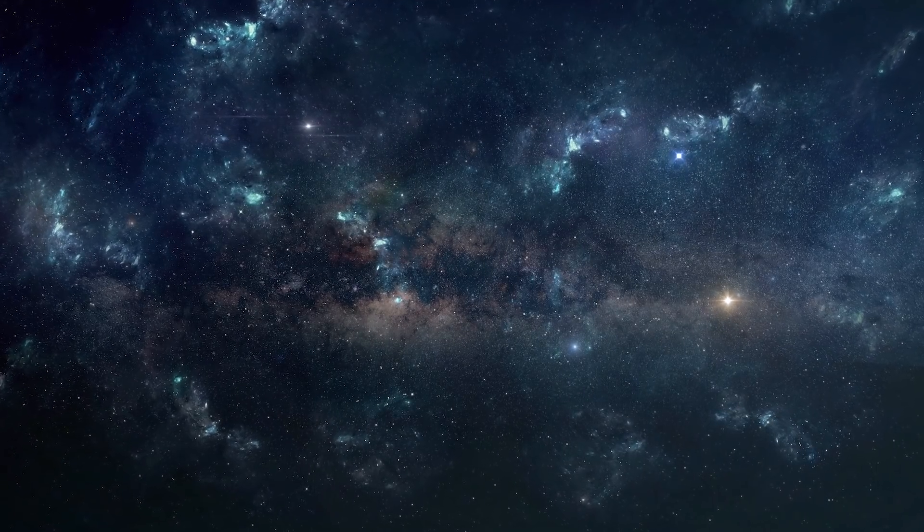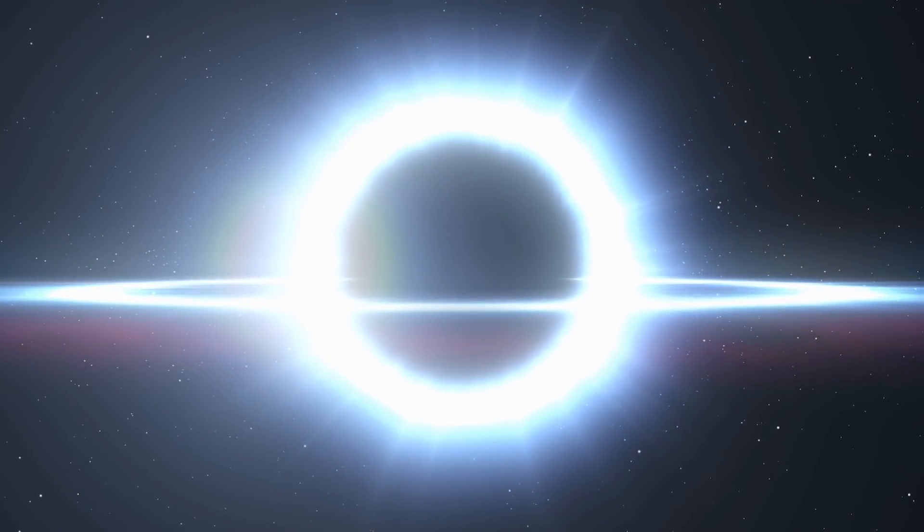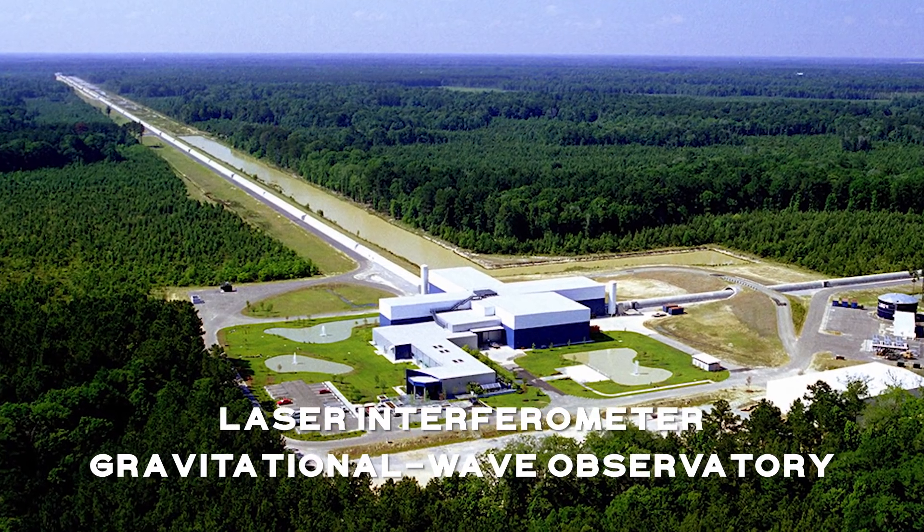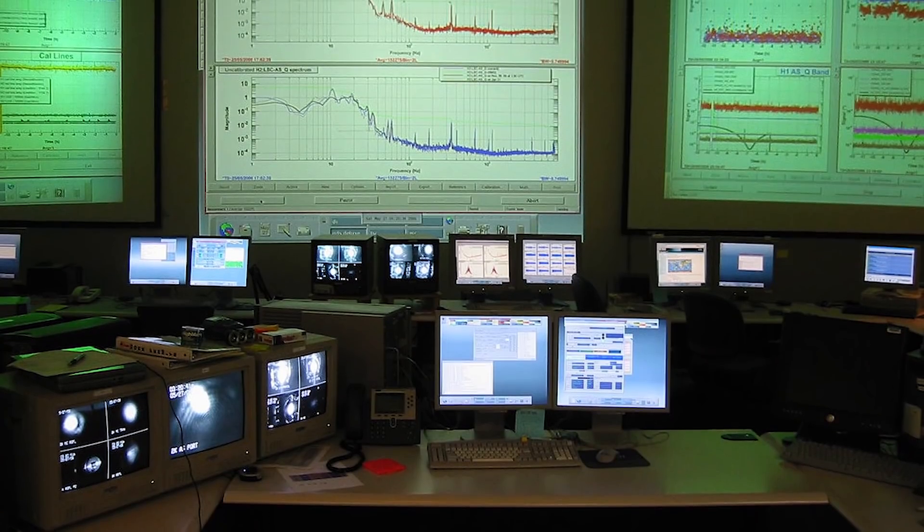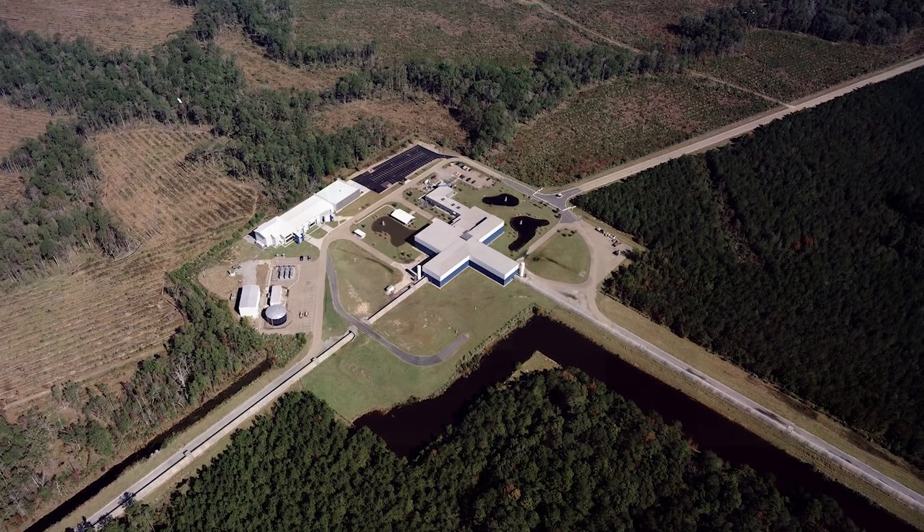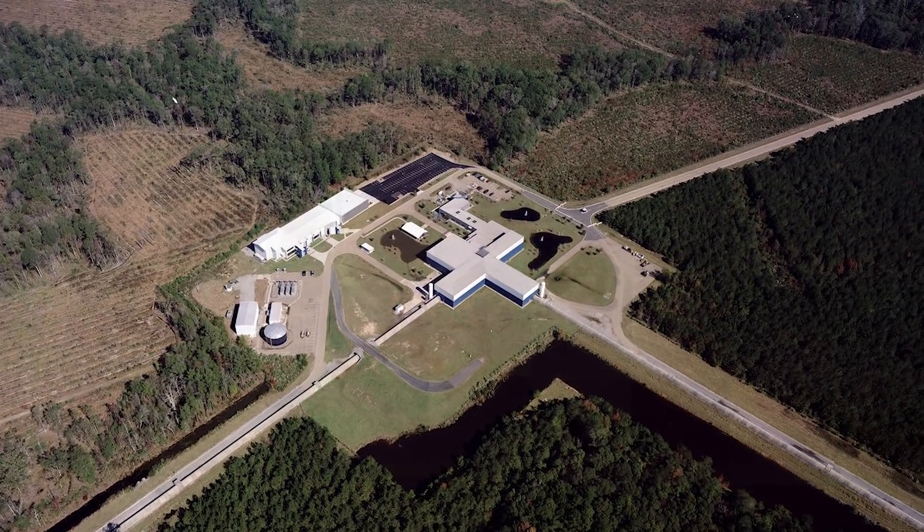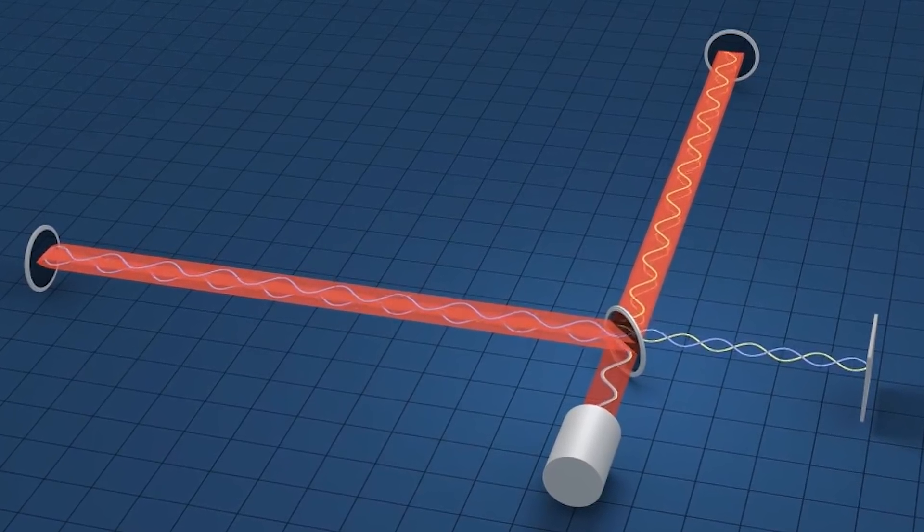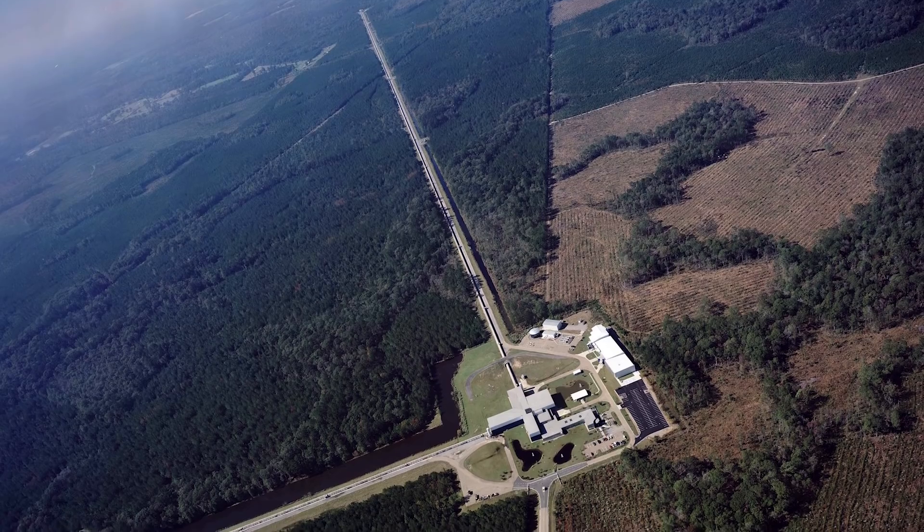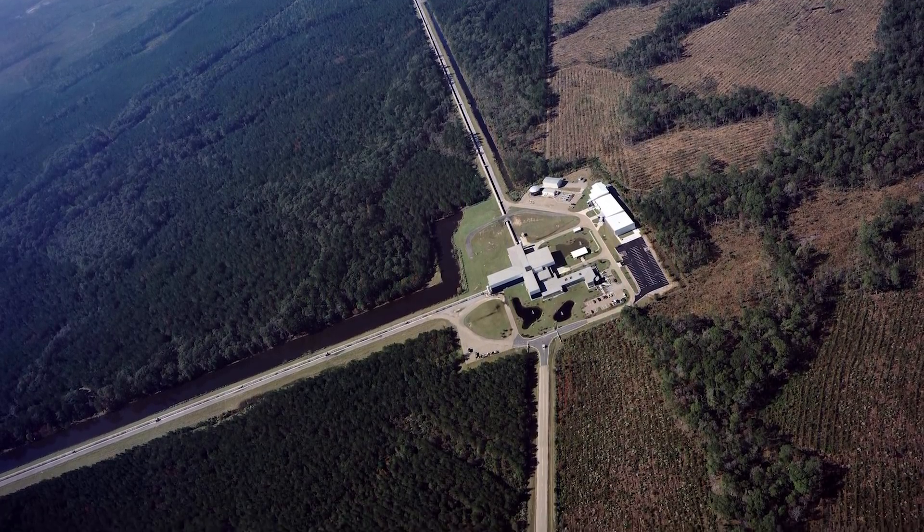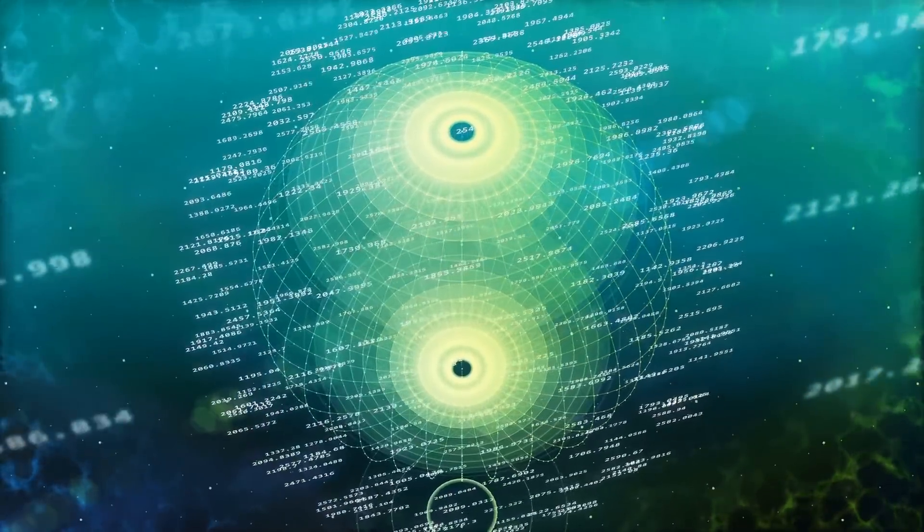It may all sound fantastical, but supermassive black holes have crashed together before. The Laser Interferometer Gravitational Wave Observatory Lab, or LIGO, even managed to record the sound of one such incident. LIGO is a large-scale observatory dedicated to detecting gravitational waves. Construction began in 1994 and took eight years to complete. Since then, the team has been working tirelessly. And a lot of what we know about supermassive black holes comes from their good work.